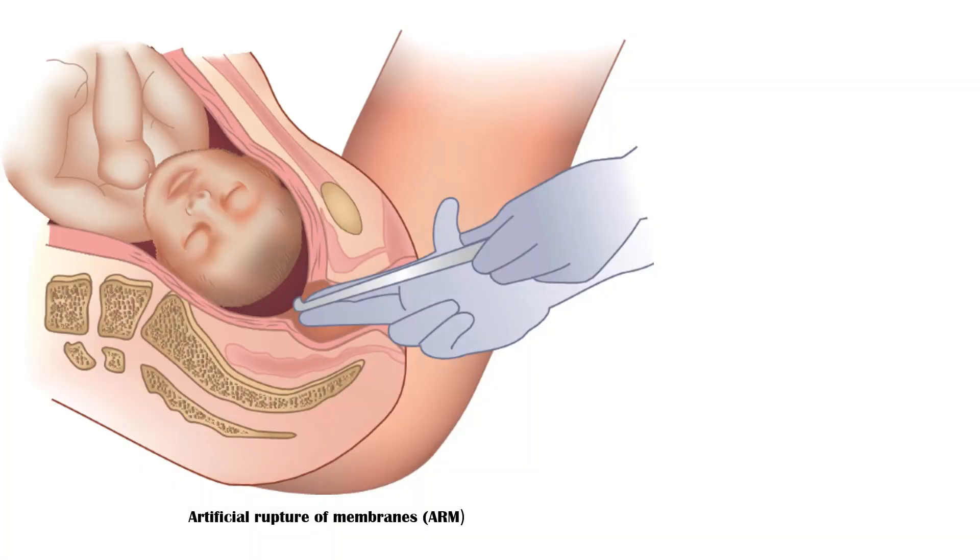Artificial rupture of membranes, also known as amniotomy, is a procedure to induce labor and to exclude the presence of meconium in the amniotic fluid.